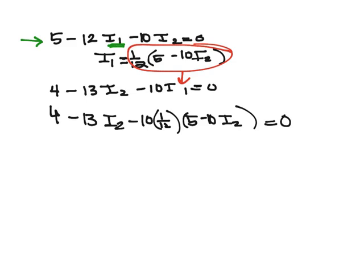Okay, and so now we look at this one equation and we only have one unknown. We have I2 and another I2, but it's the same variable. Okay, so we have to do a little bit of math.